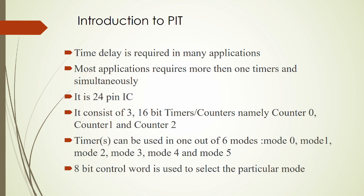The 8253 or 8254 is a 24-pin IC which provides three 16-bit timers — namely counter 0, counter 1, and counter 2. Timers can be used in one of 6 modes: mode 0, mode 1, mode 2, mode 3, mode 4, and mode 5. The 8-bit control word register is used to select the particular mode.